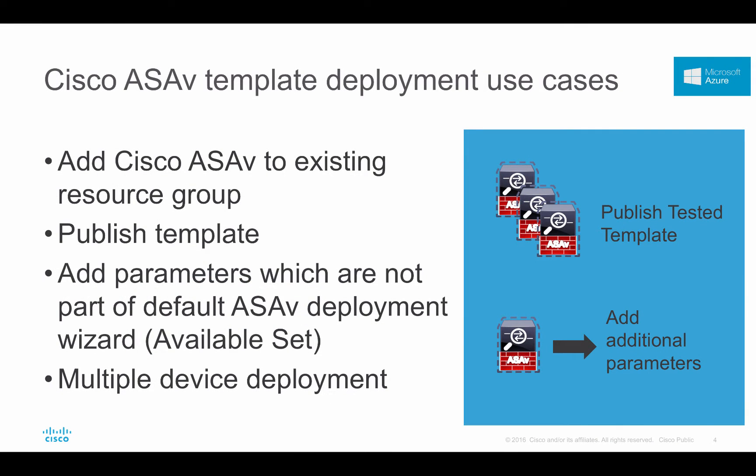In the previous video when I talked about installation of Cisco ASAv using a wizard, at the time of deployment the wizard requested a new resource group. So every time when you create a Cisco ASAv using a wizard it will ask you to create a new resource group. But if the requirement is to place an ASA in an existing resource group, you need a template.